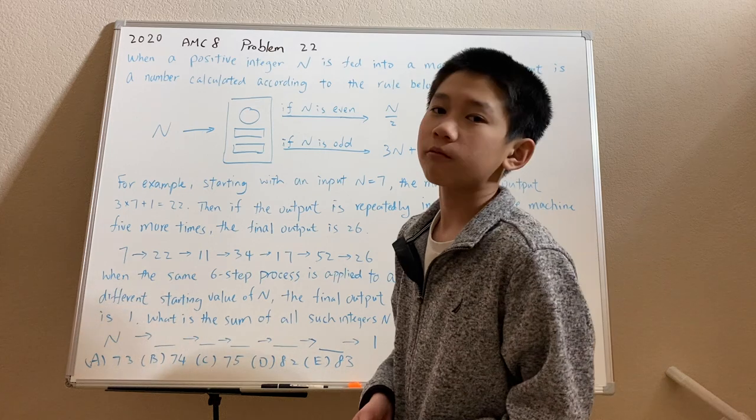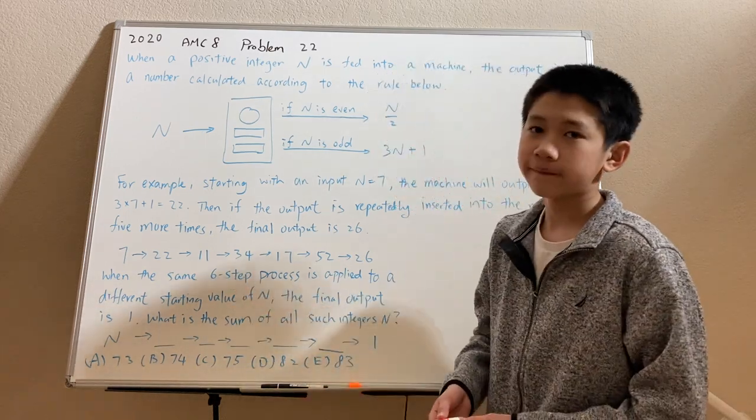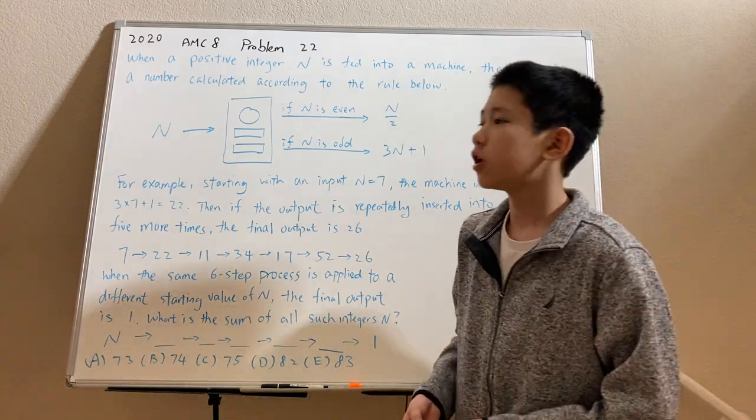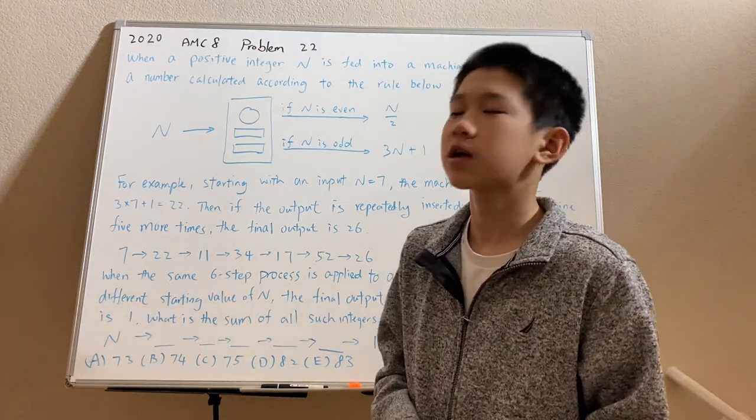Right off the bat, we notice that guessing and checking won't work because there's just too many values of n that could result in 1. So we use a strategy called working backwards.